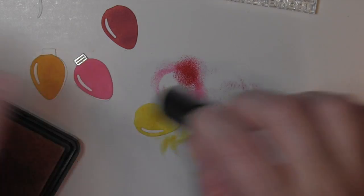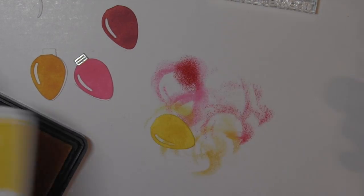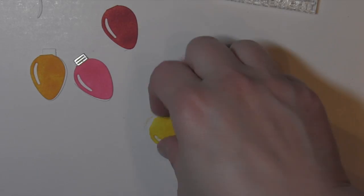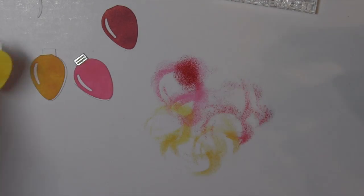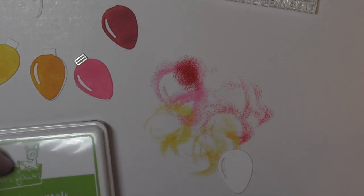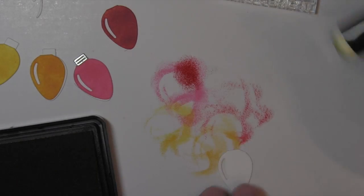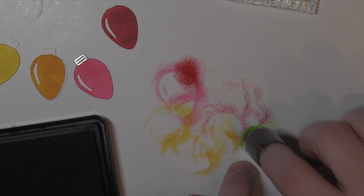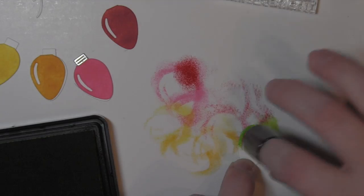Very easy. You could also use ink blending tools or other foam products if that's what you have. I kind of like these Daubers. Like I said, they're small. That little foam area is small so it's really nice for control of where the ink is going to go.